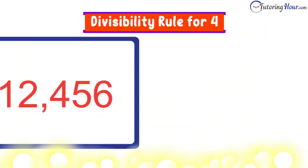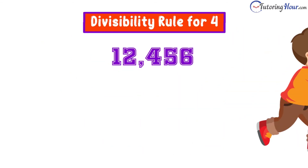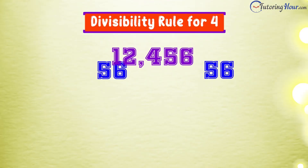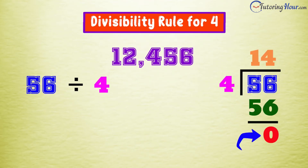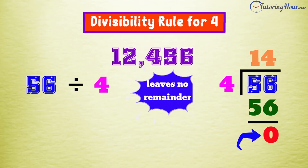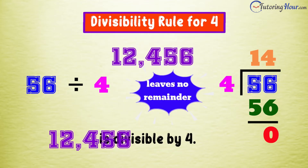Now we'll check if our next number is divisible by 4. Dividing 56 by 4 gives us 14 and there is no remainder. This shows the number is divisible by 4. Now this is an easy rule to remember, right?